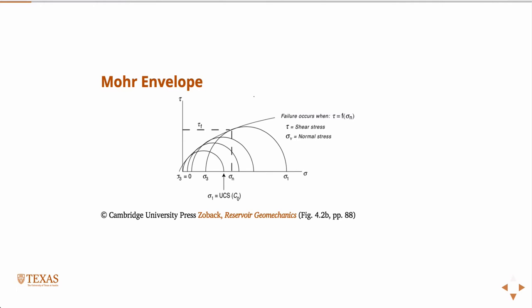We can plot all of those Mohr circles on a normal stress sigma-n versus shear stress diagram. Where sigma one and sigma three intersect, we plot all these series of circles. If we sketch a line that's tangent to all those circles, this is what we call the failure envelope.